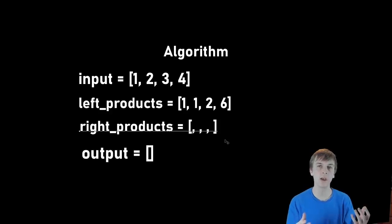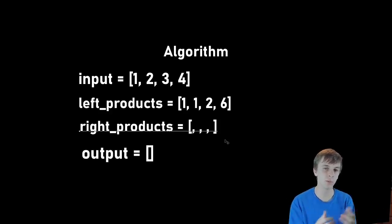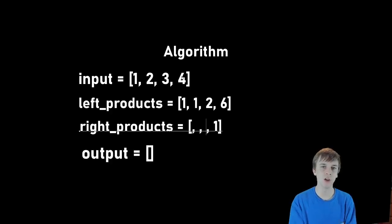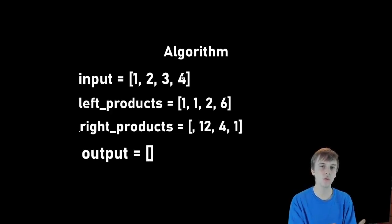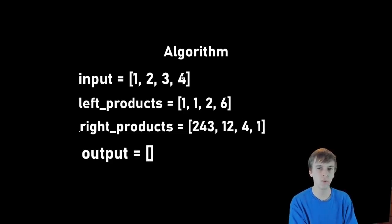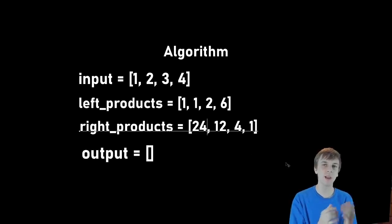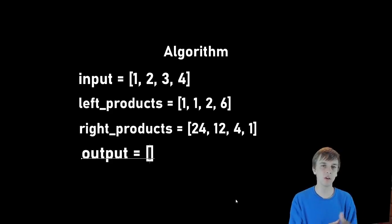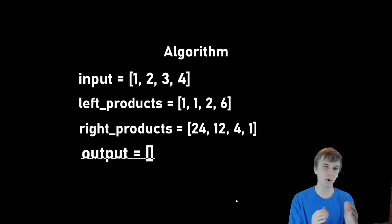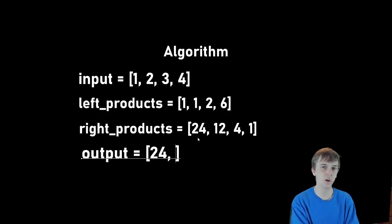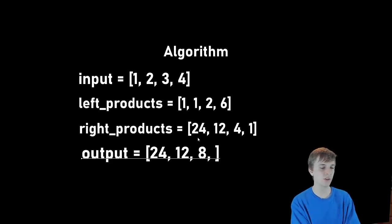Now let's fill up our right products array — the product of everything to the right of the current element — going backwards through the array. Starting at four: nothing to the right, so we put a one. To the right of three is a four, so we put a four. To the right of two is a three and a four, so we put 12. To the right of one is two times three times four, which is 24. We've now filled up both arrays. The final step is to loop through and multiply each element of the left products array by each element of the right products array.